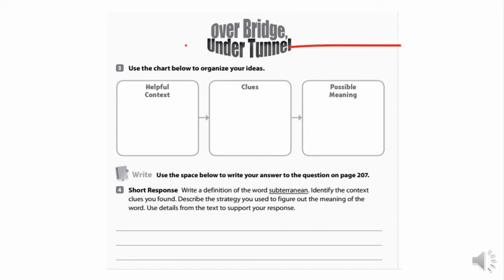Lesson six has us write a short response, and I'm going to jump down to number four so we'll know what we're talking about. Write a definition of the word subterranean. So that's the word they want us to respond to. We need to identify the context clues that were found to help us determine the meaning of this word.